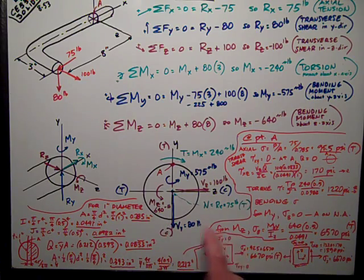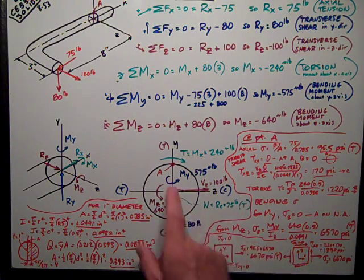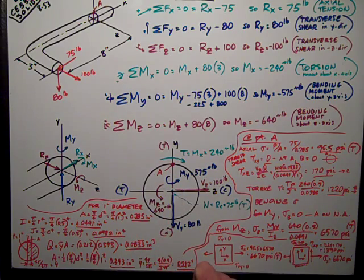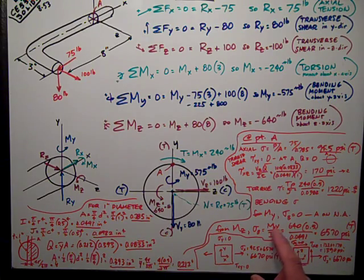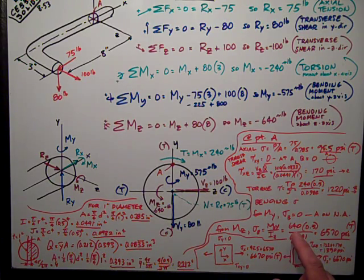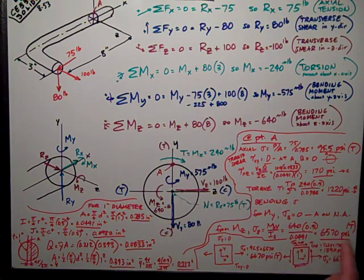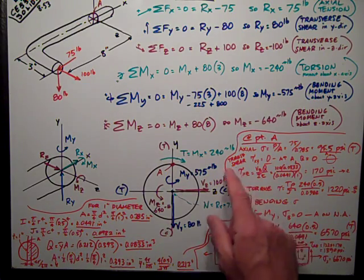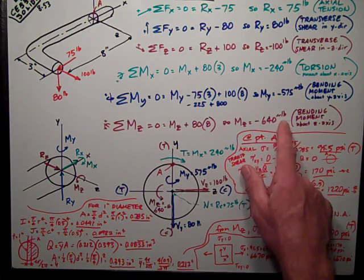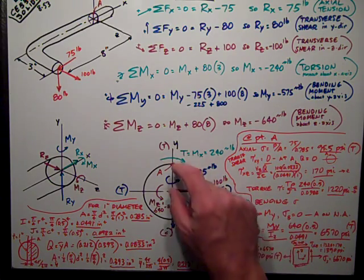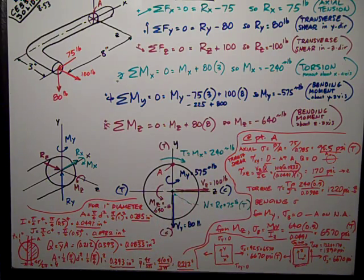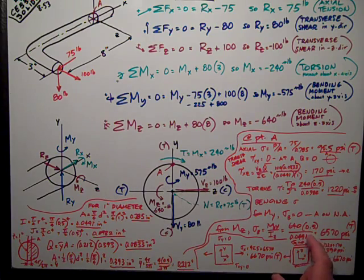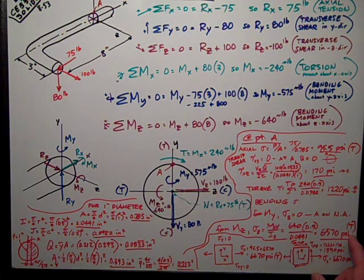But for bending about the Z axis, A is the extreme fiber. I just go to the formula MY over I. 640 inch pounds was my bending moment about the Z axis, times Y, which is the distance from the neutral axis to the point where I'm trying to figure the bending stress, divided by I. Works out to be 6570 psi.